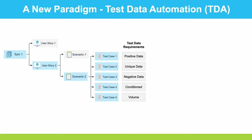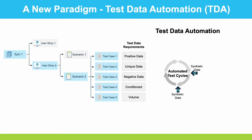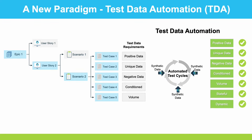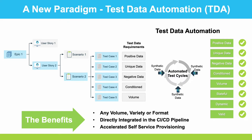So we propose a new paradigm: test data automation, TDA. In test data automation, all of the positive data with referential integrity, unique data, negative data, and so forth can be provided for your quality engineering environment. Our tagline is any volume, any variety, and any format of data, directly integrated into your pipeline.